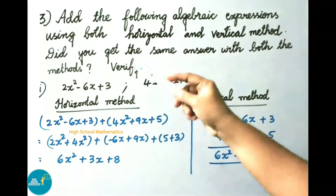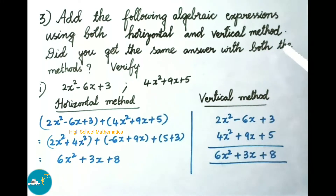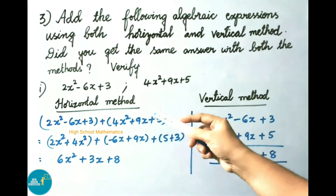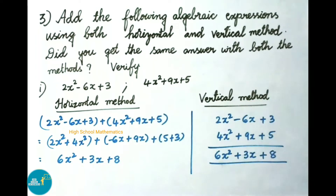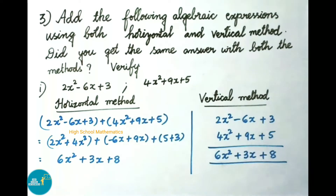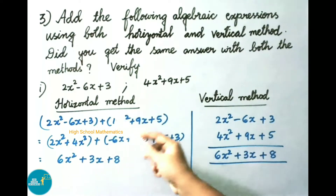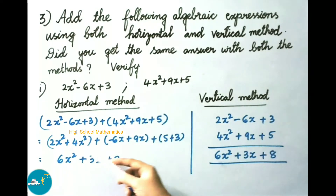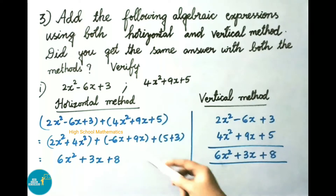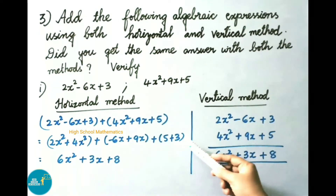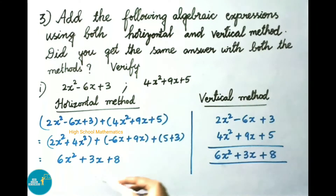See now question number 3: add the following algebraic expressions using both horizontal and vertical method. Did you get the same answer with both methods? Verify. The first one: 2x square minus 6x plus 3. Using the horizontal method: 2x square minus 6x plus 3 plus 4x square plus 9x plus 5. Rearranging like terms: 2x square plus 4x square gives 6x square; minus 6x plus 9x gives plus 3x; 5 plus 3 gives 8. So the answer is 6x square plus 3x plus 8.